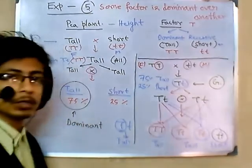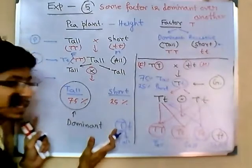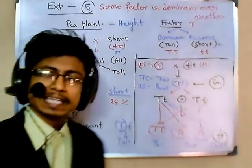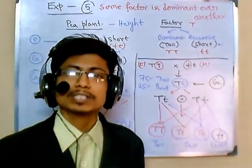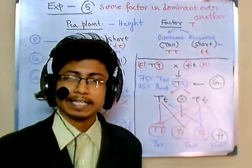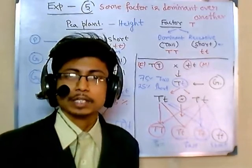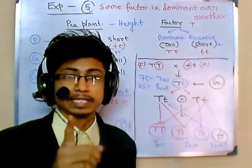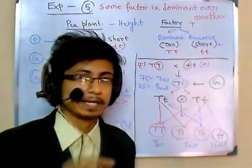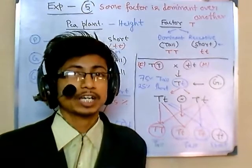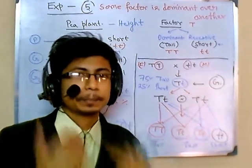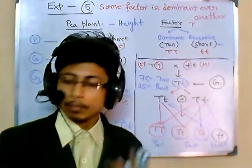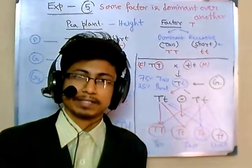This scenario explains the experimental outcome of Gregor Mendel. That means genetics follows some rules. This factor transfer from parent to offspring follows a rule: genes, which are present in pairs, transfer one from the father and one from the mother.